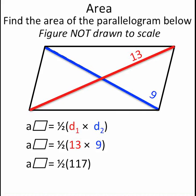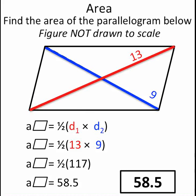Multiply that out, and that's one-half of 117, or 58 and a half, or 58.5. So, the area of this parallelogram is 58.5.